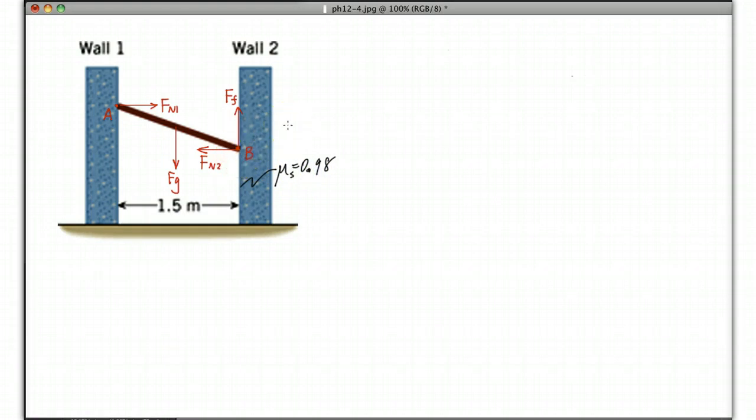The question is asking what is the length of the longest board that can be propped between these two walls. The information given is the coefficient of static friction and the distance between two walls.